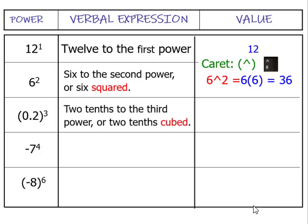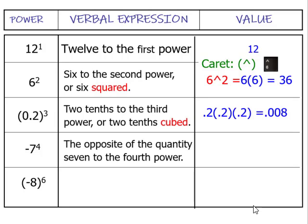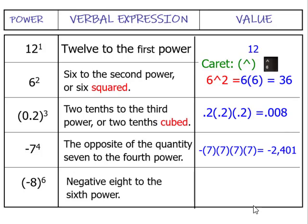Two tenths to the third power, or two tenths cubed, would be eight thousandths. In this case, we're going to read this as the opposite of seven to the fourth power. You can't say the opposite of the quantity seven to the fourth power either. Remember, the negative is not repeated. The negative stays outside, and we're repeating seven times seven times seven times seven. And this is going to give us two thousand four hundred one. And the opposite of that is negative two thousand four hundred one. And the last one, negative eight to the sixth power. And this one will give us two hundred sixty-two thousand one hundred forty-four.